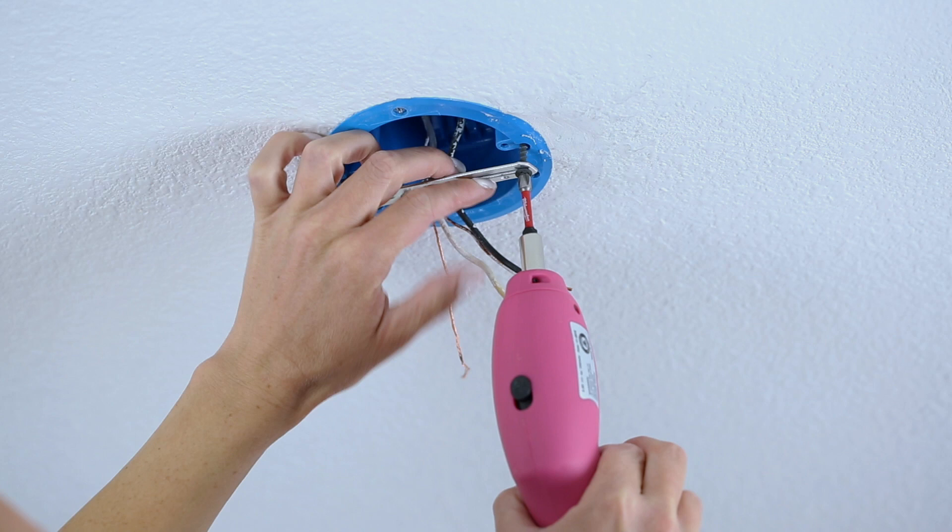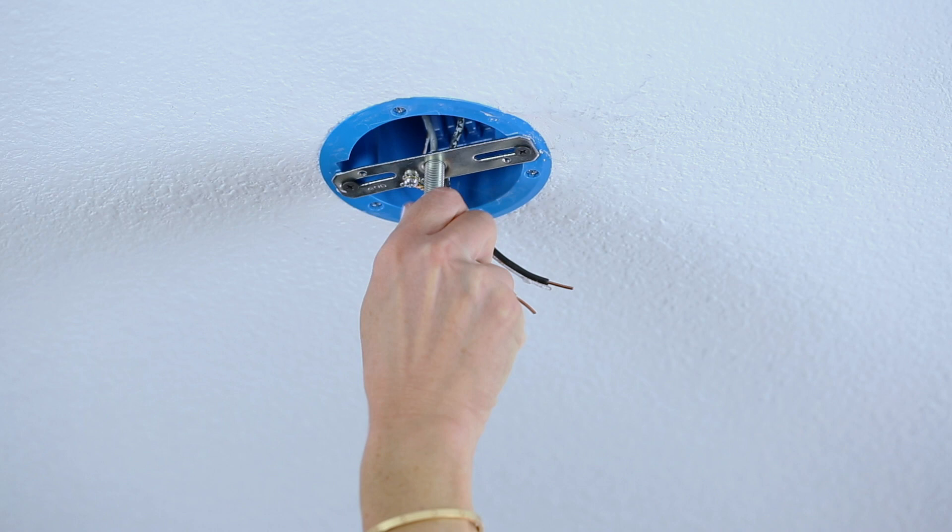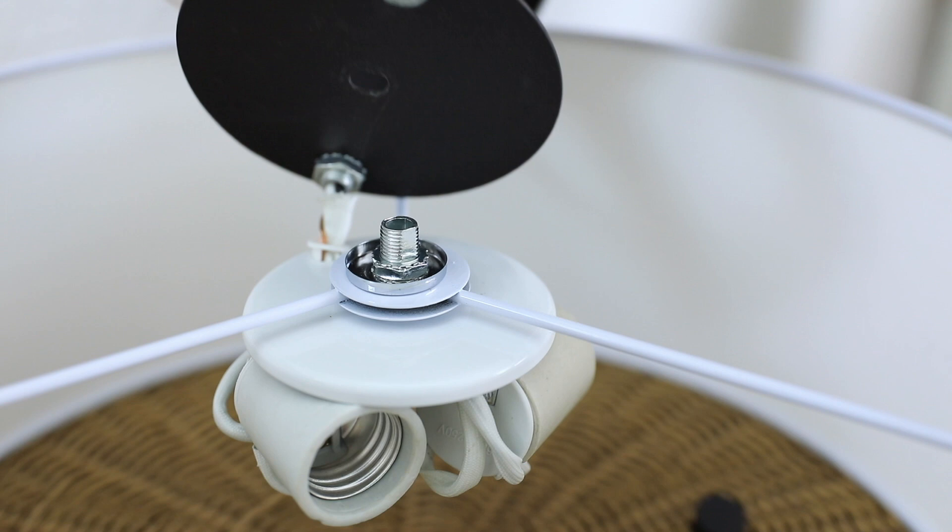Attach mounting bracket to ceiling electrical box. Thread the all-thread rod into mounting bracket and adjust to the correct height for your canopy.